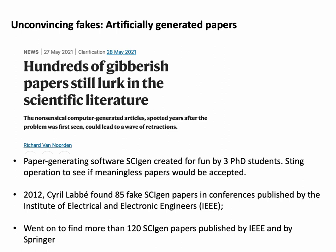There are also papers that don't seem to start with anything much at all — they're just artificially generated. Cyril Labbe, back in 2012, found fake papers generated by software called SciGen, which was actually created as a bit of a joke by three PhD students who wanted to see whether, if they submitted meaningless papers to conference proceedings, they'd get accepted. And they obviously did. He found a whole load of them in IEEE journals and also in Springer journals. You try and read these things and it does your head in because there is no coherence and no clear message — but they've got the language of science. It's like being in a parallel universe.